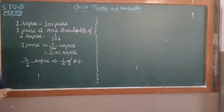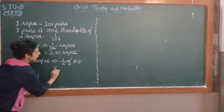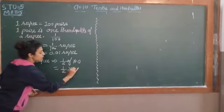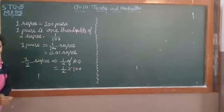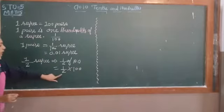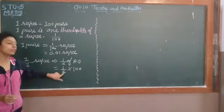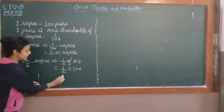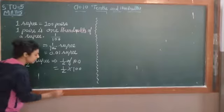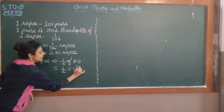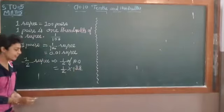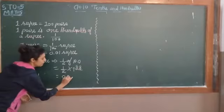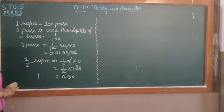So we can write: half multiplied by 100, that is 1/2 multiplied by 100. Two 50s are 100. So we can say 0.50.